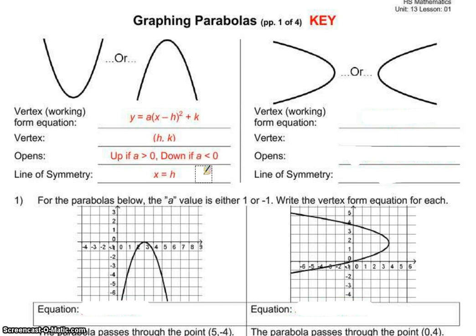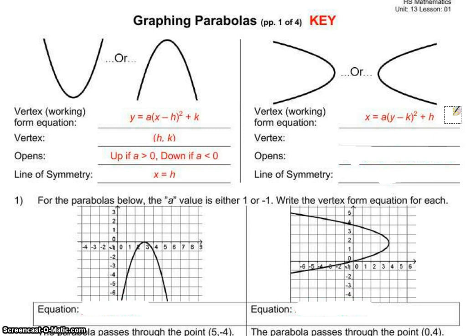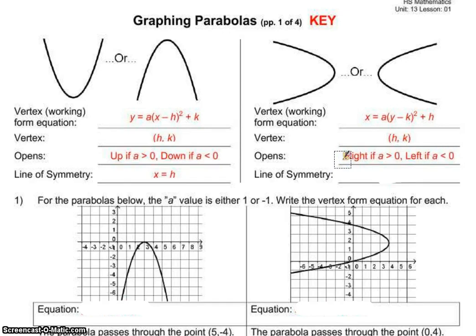Now if I have a parabola that's going side to side — and you're probably less familiar with these because we dealt more with parabolas going up and down — the working equation switches x and y, so I'm going to have x equals a(y minus k) squared plus h. My k and h also switch spots. The vertex still remains my h and k. If a is greater than zero it opens to the right; if less than zero, to the left. The line of symmetry switches too: it's going to be y equals k.